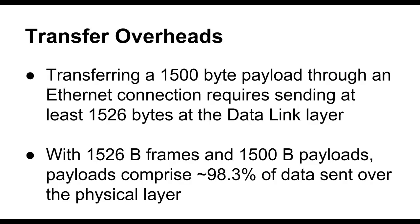For every 1500 bytes that I transmit, I have to send at least 1526 at the data link layer through the underlying physical layer. Taking 1500 divided by 1526, the payload comprises about 98.3% of the data sent over the physical layer. So however much data is passing through the data link layer, at least about 98.3% of it is going to be data I'm actually interested in — the rest is overhead.